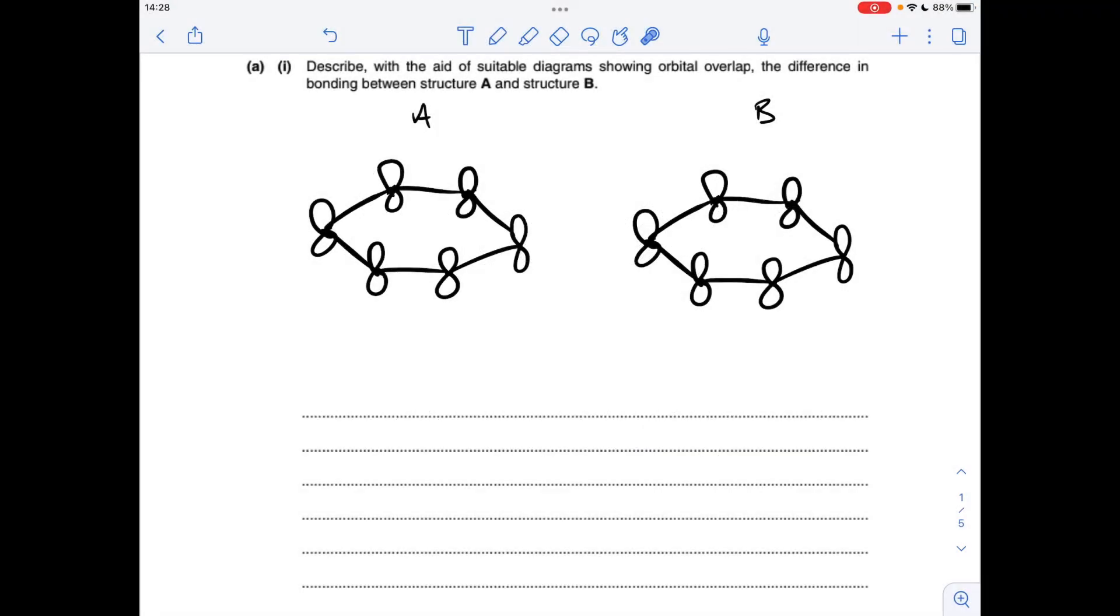Okay so part A, I've started the diagram off but I just wanted to talk through to explain the difference. So we've got our six carbon atoms joined together by sigma bonds in both situations. Obviously there's hydrogens there as well but we don't show them.